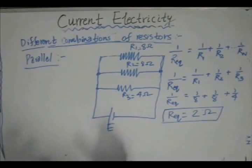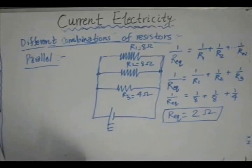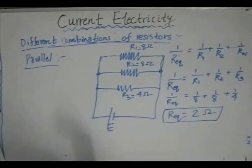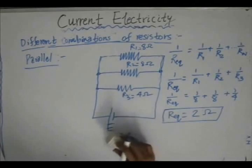Now, having seen series and parallel combinations, it does not mean every resistor combination falls into one of those two categories. There may be cases where resistors are neither in series nor in parallel. Let us take a good question on determining the equivalent resistance for such a combination circuit.